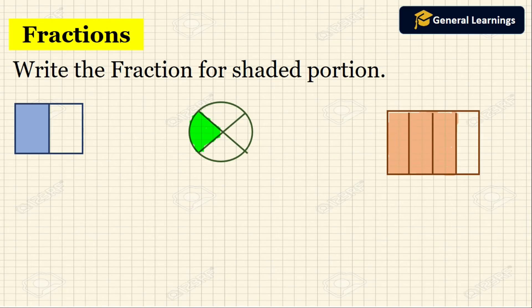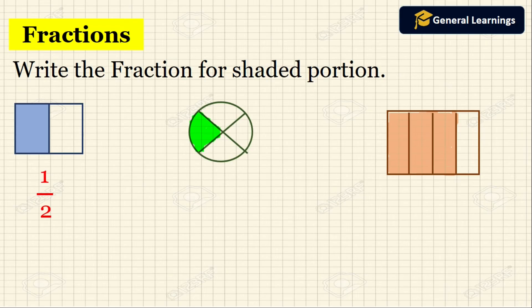Now we are going to write the fraction for the shaded portions. In the first picture, a square is divided into 2 parts and 1 part is shaded. The shaded portion goes in the numerator and the total number of parts goes in the denominator. So the fraction is 1 by 2 — numerator 1 (shaded), denominator 2 (total parts).